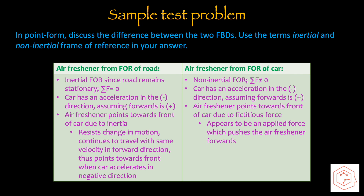Part b asks to discuss the difference between the two free body diagrams using the terms inertial and non-inertial frame of reference. From the frame of reference of the road, this is an inertial frame since the road is stationary and net force is zero — the law of inertia holds true. The car accelerates in the negative direction. The air freshener points towards the front of the car due to inertia: it maintains its forward velocity even as the car decelerates, thus ending up pointing towards the front.